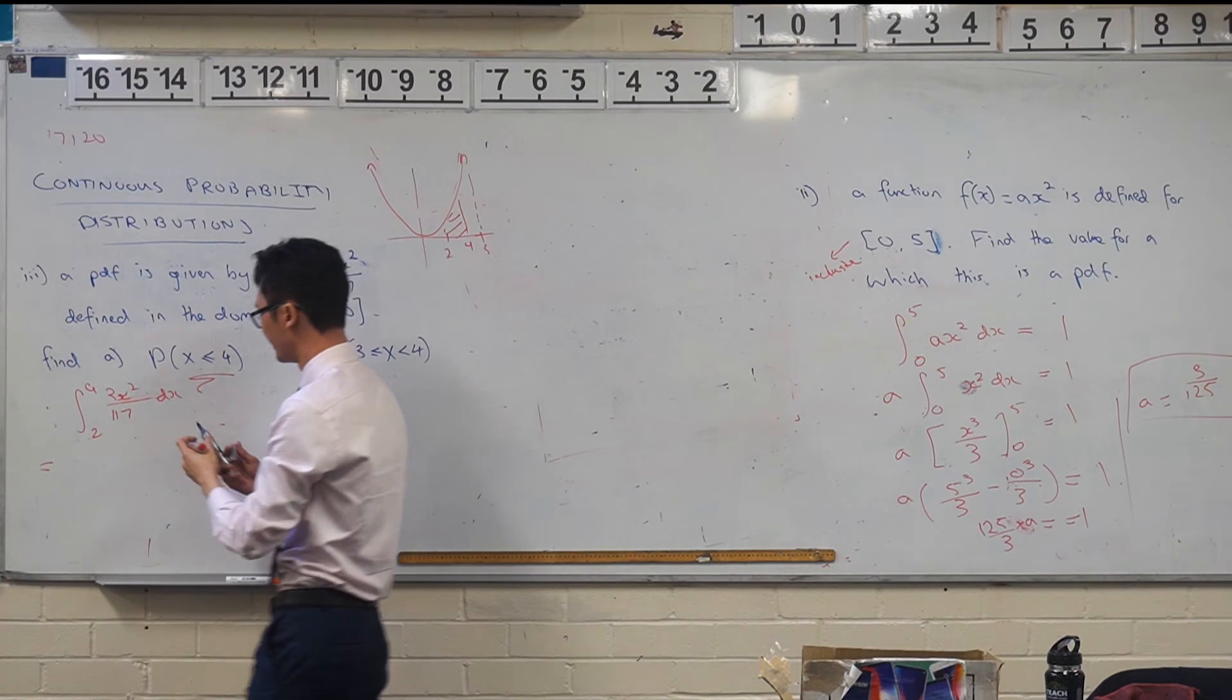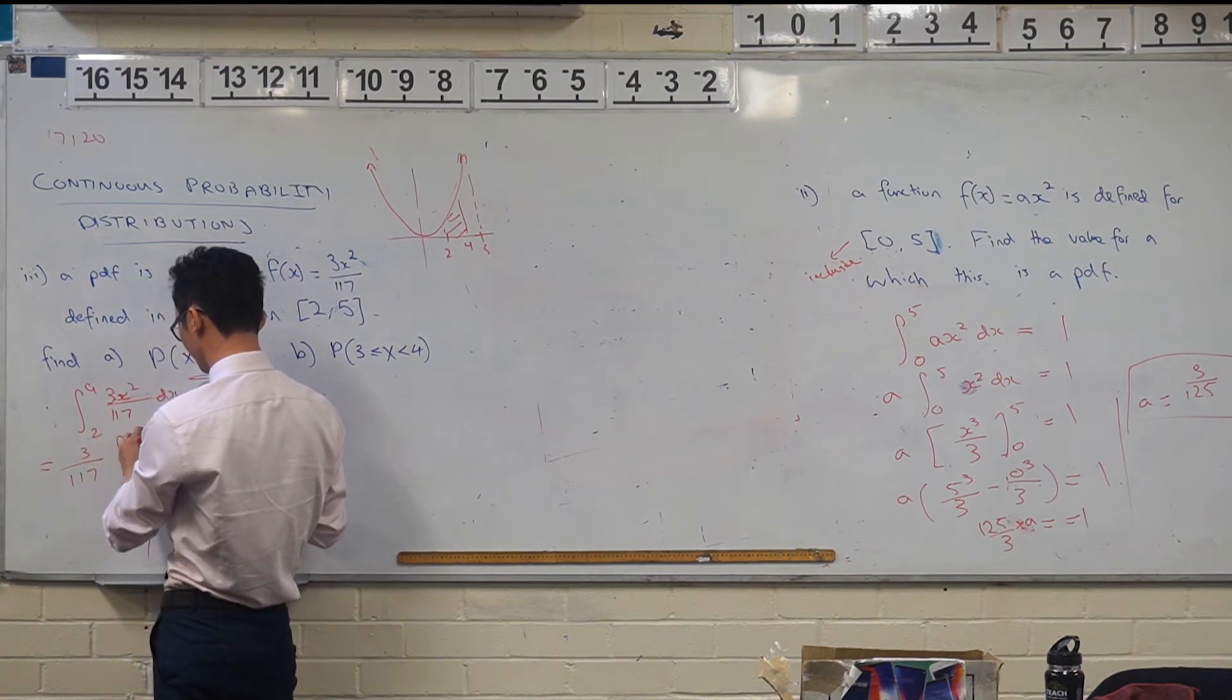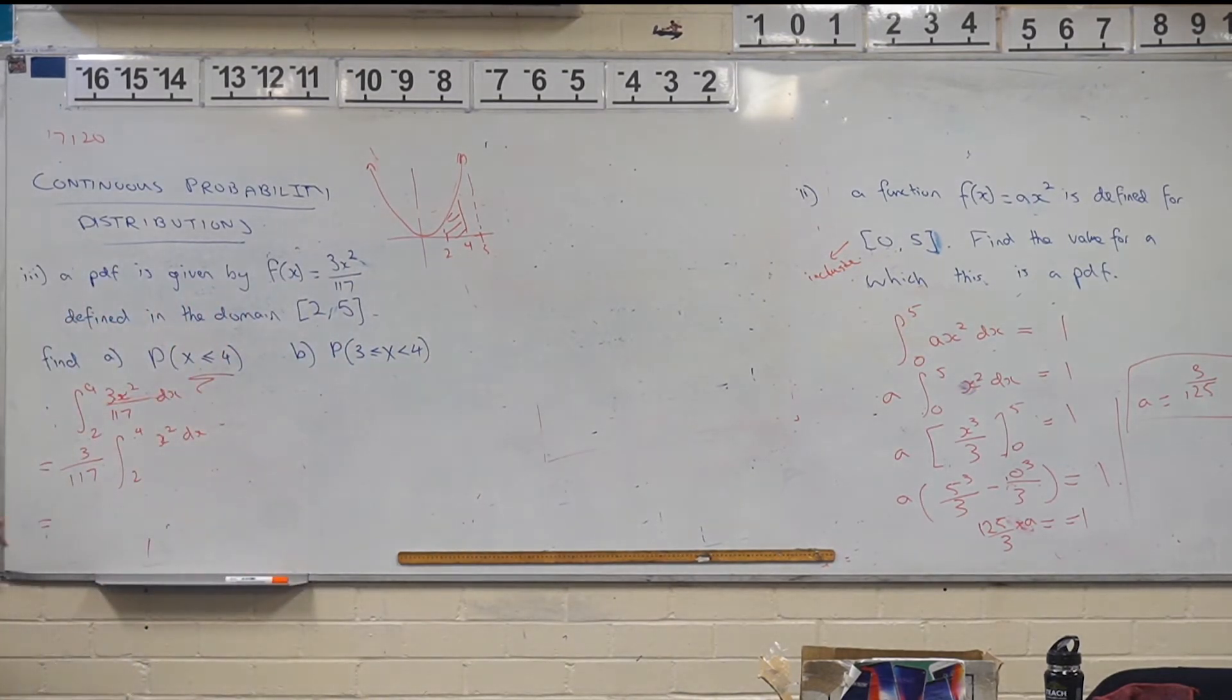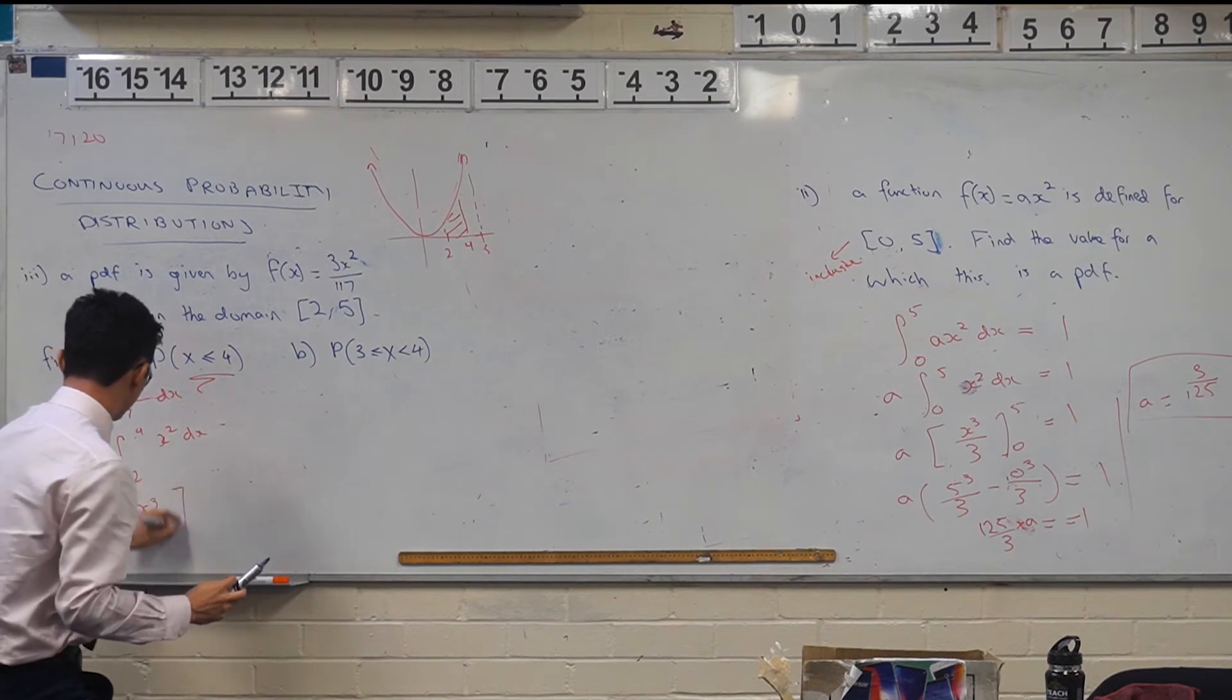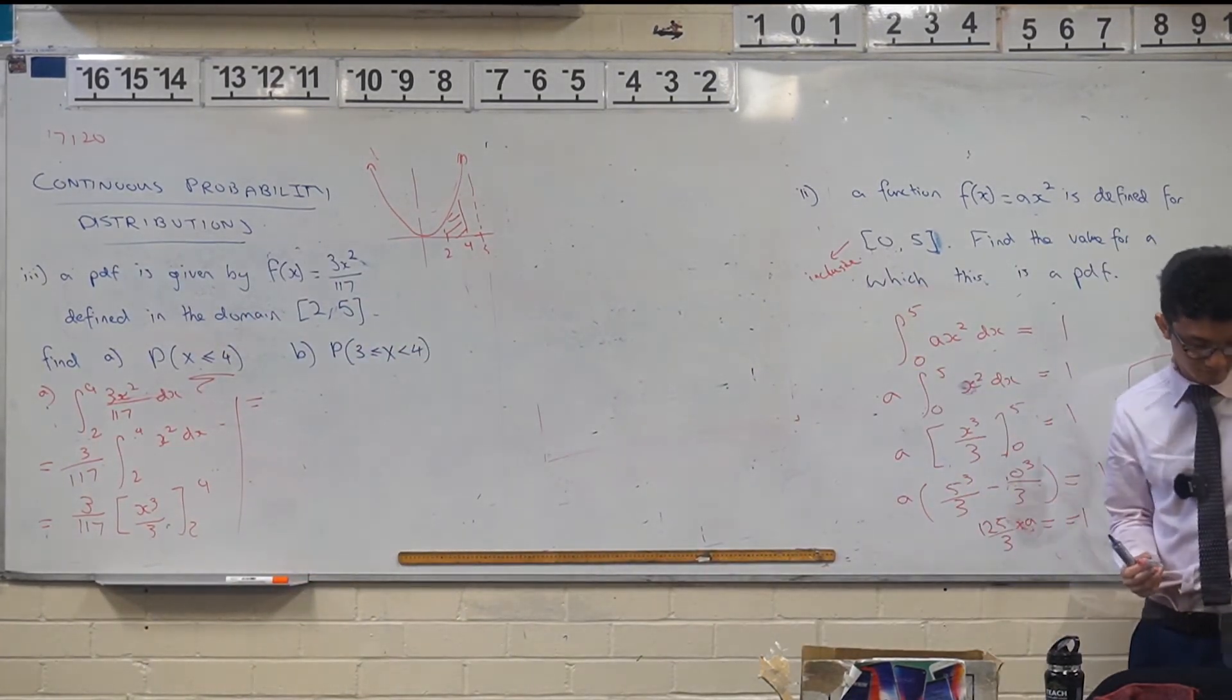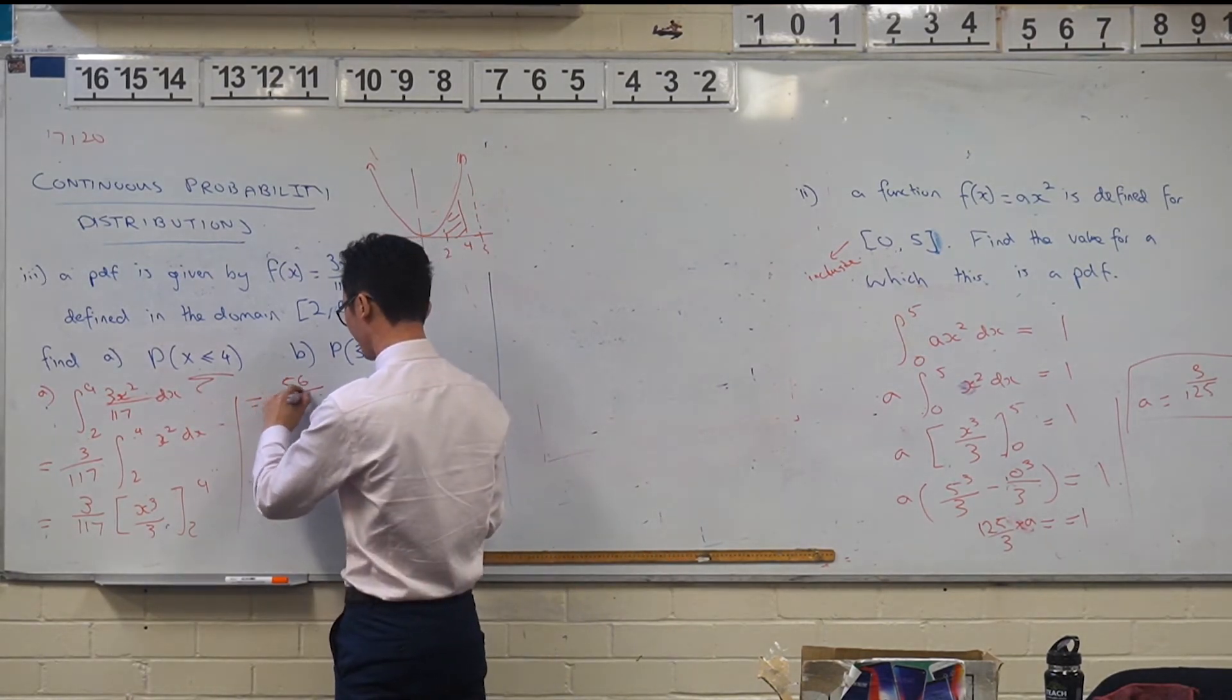Do you have that, by the way? Do you have the integral of this? Okay. Well, again, I'll just take the constant out, just make it a bit easier. Kyle, what's my integral for this one? Good. So three on 117, X cubed on three from two to four. I'm not going to write out the working. I'll just evaluate it. Someone can give it to me. This is part A. Matty, can you just need to calculate it for me? 56 on 117. Did you get that, Matty? Perfect.